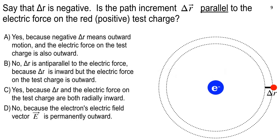Let's do some clicking. I want you to read carefully and think — on exams, Thursday, midterm exam number one, I especially want you to read carefully and think. Turn on your clicker, get the go-nitro message, and let's go. Here's my array: the central charge is an electron — negatory. Let's say that your delta R is negative. Is it parallel to the electric force on the red positive test charge? Yes or no? Read carefully and make a decision.